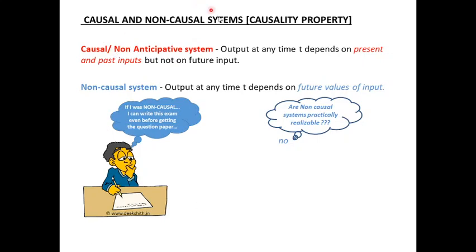A causal system is one in which the output at any time t depends on present and past inputs but not on future input. That means if I need to evaluate any output at current time t, it will depend only on the present and the past values but definitely not on future values. Such a system is called a causal system. It is also called a non-anticipative system because we will not be able to predict the output based on future values of the system.